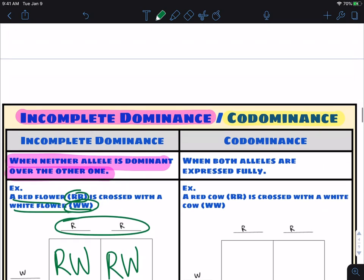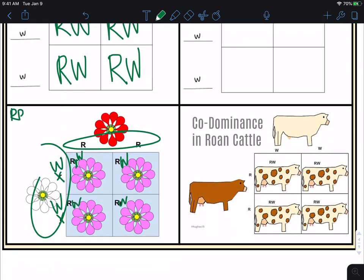The genotype for red, just to kind of summarize here, was RR. The genotype for white was WW. What was our genotype for pink? It was RW. In other words, it was one of each.